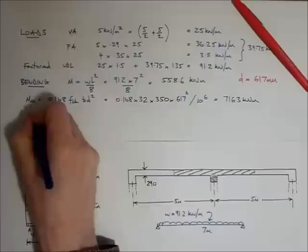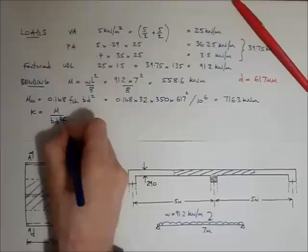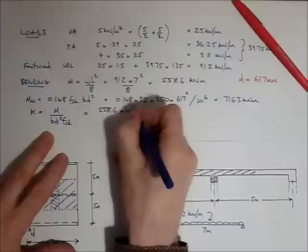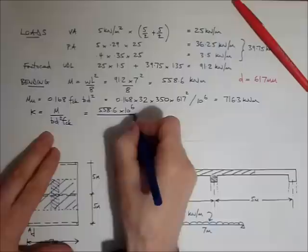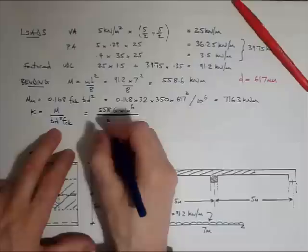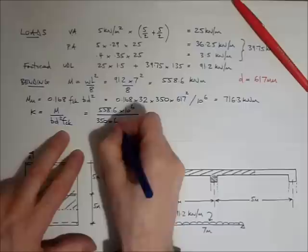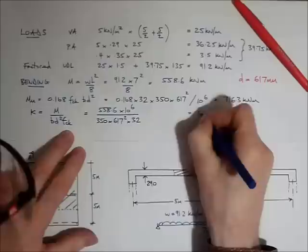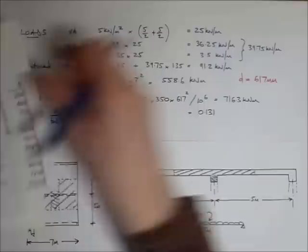And K is M over bd² fck. Then we're going to make use of this in a graph provided by the IStructE. So the bending moment is 558.6. I'm 10 to the power of 6 because I'm going to convert these kilonewton meters into newton millimeters. Because all along the bottom of this equation, I'm going to be working in millimeters, millimeters squared, and newtons per millimeter squared. OK. bd² fck. I calculate that out. It comes to 0.131. 0.131.